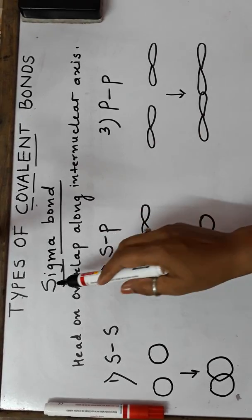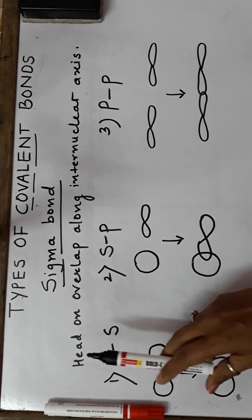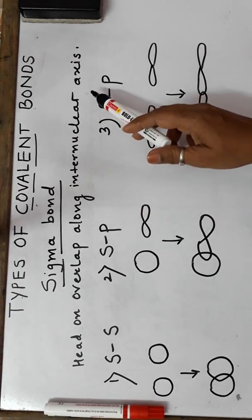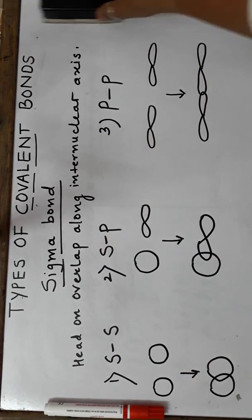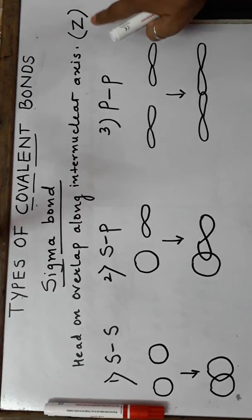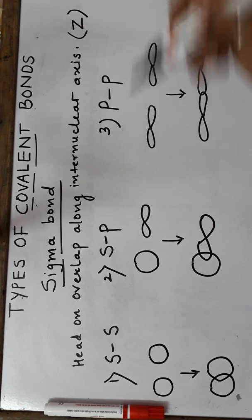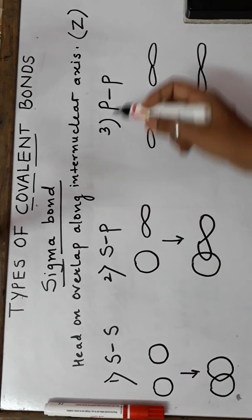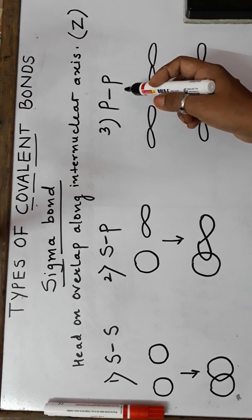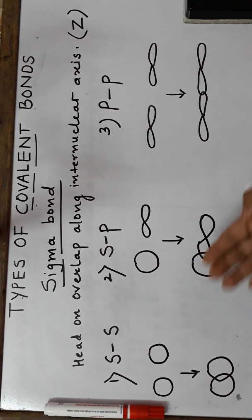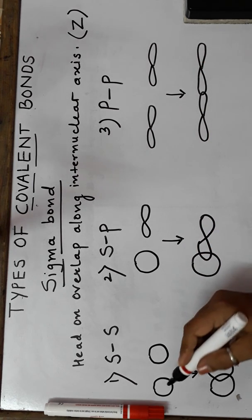A sigma bond is that kind of overlap which is done along the internuclear axis, which is called a head-on overlap. Now the internuclear axis essentially means the z-axis — by convention, the internuclear axis is the z-axis. A sigma bond can be formed by s orbitals or p orbitals — purely p can also form a sigma bond. These are the kinds of figures you're going to draw in the exam if they ask you to show the various kinds of sigma bonds.